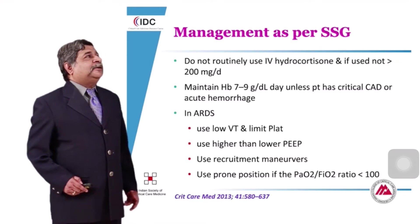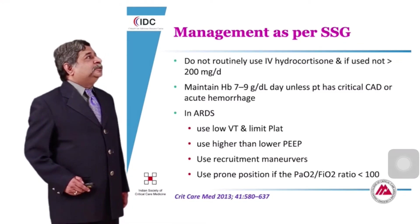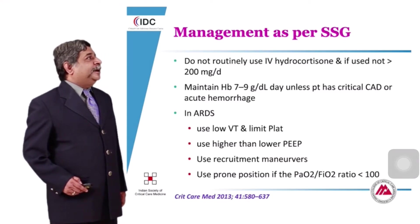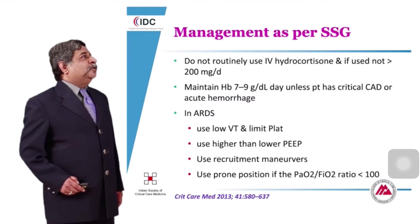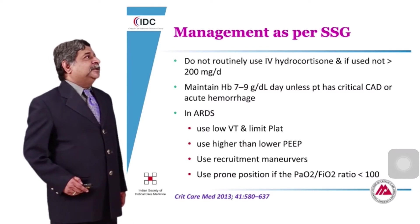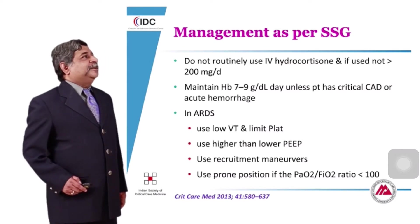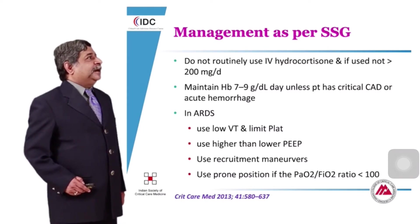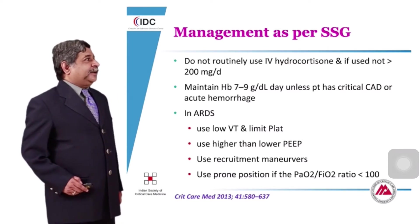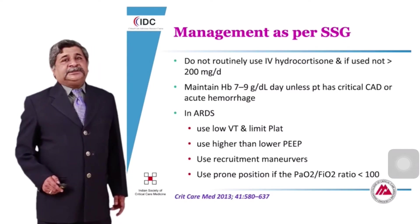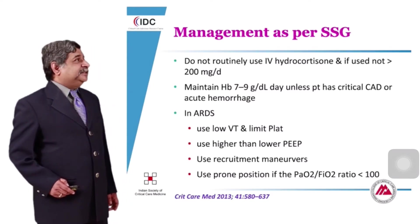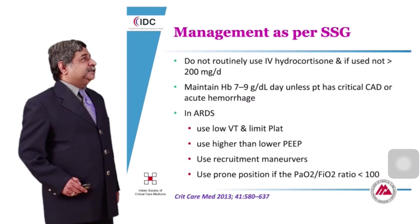If you use hydrocortisone at all, do not use doses more than 200 mg per day in divided doses. Maintain hemoglobin between 7 to 9 g/dL unless the patient has critical coronary artery disease or acute hemorrhage. If the patient develops ARDS because of sepsis, there are several specific management suggestions.